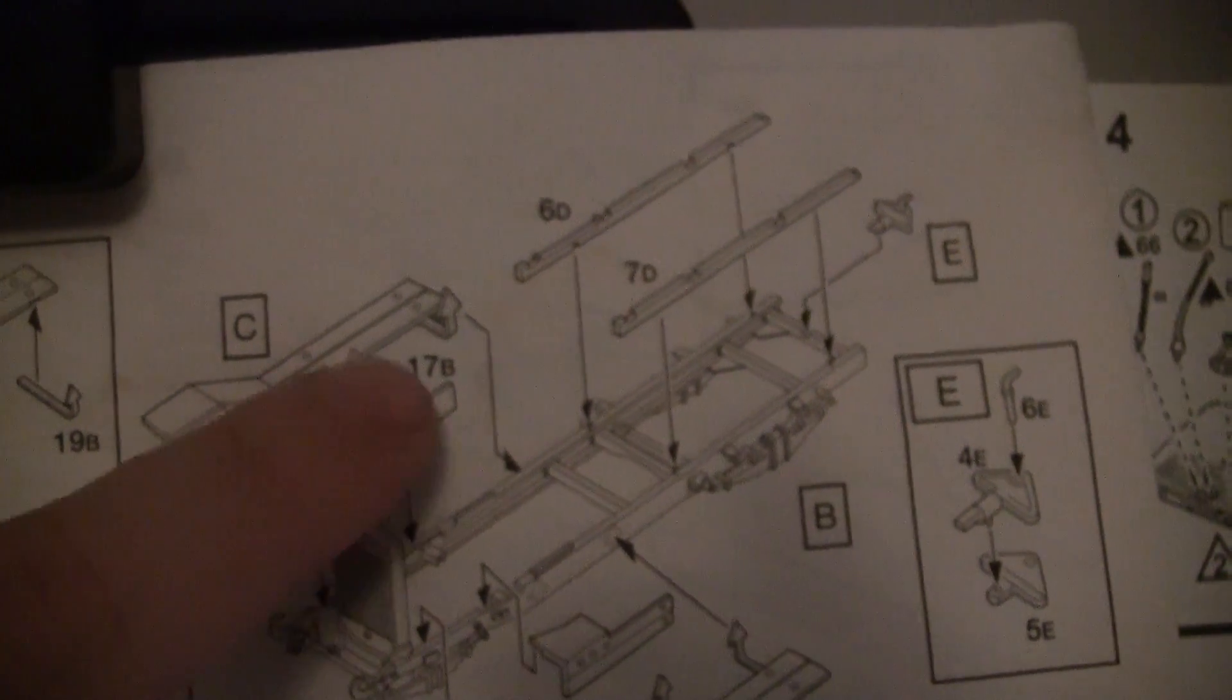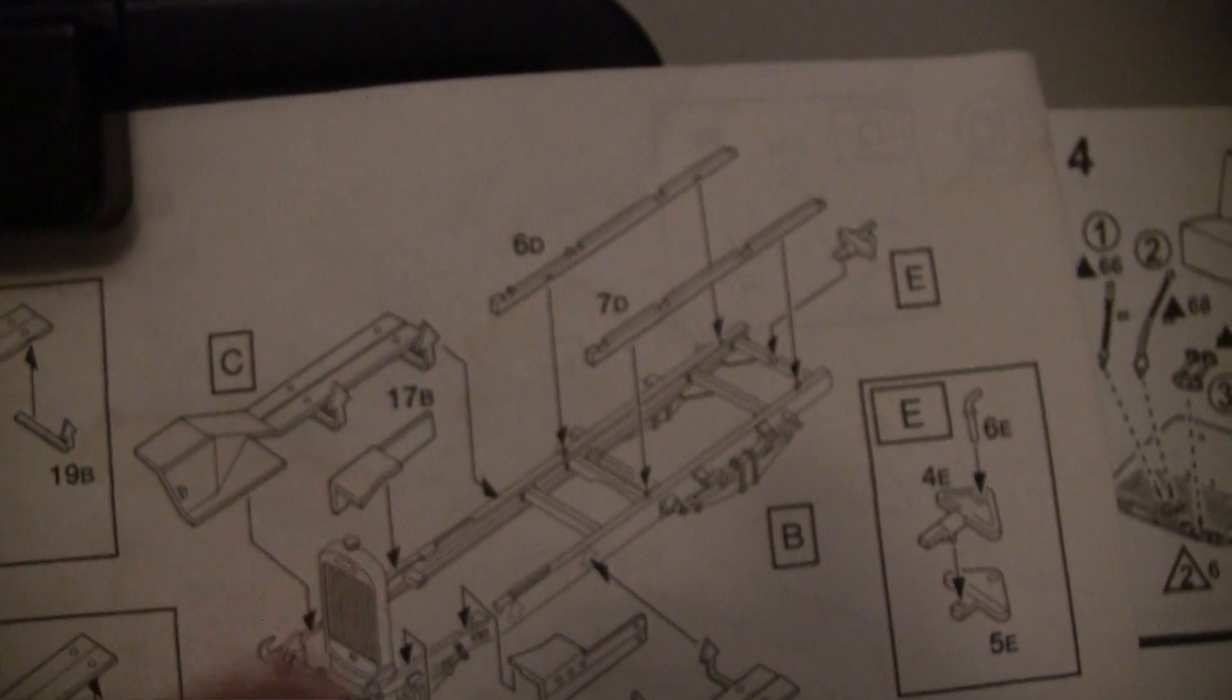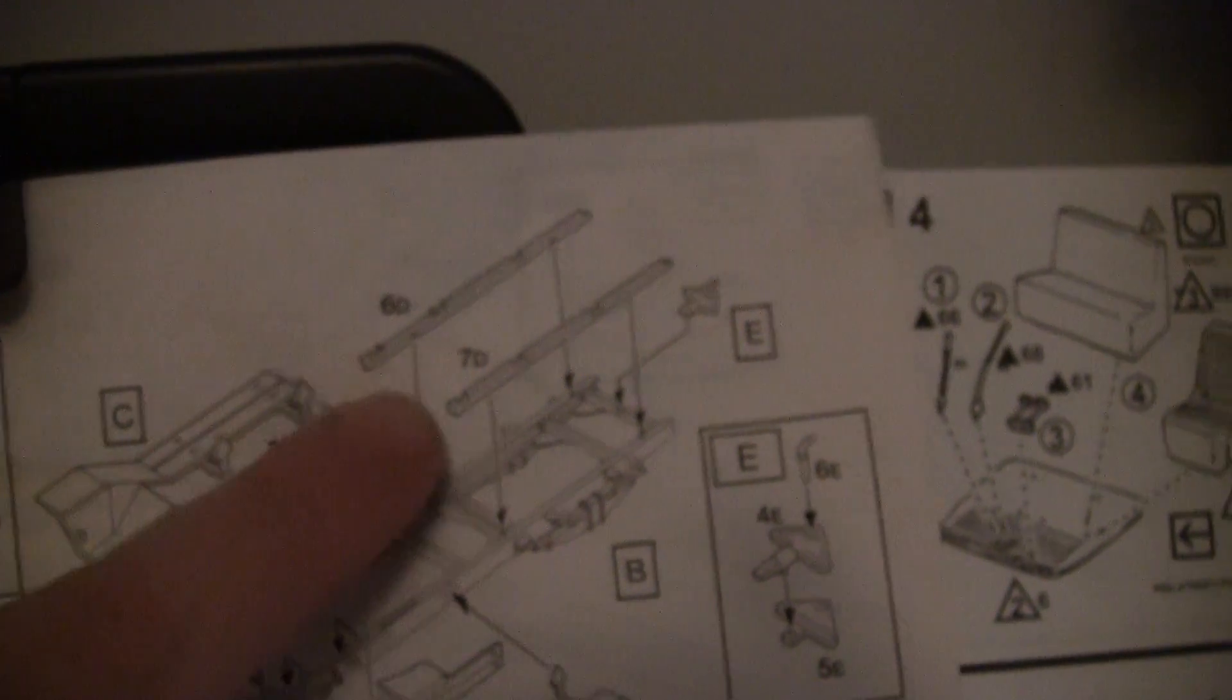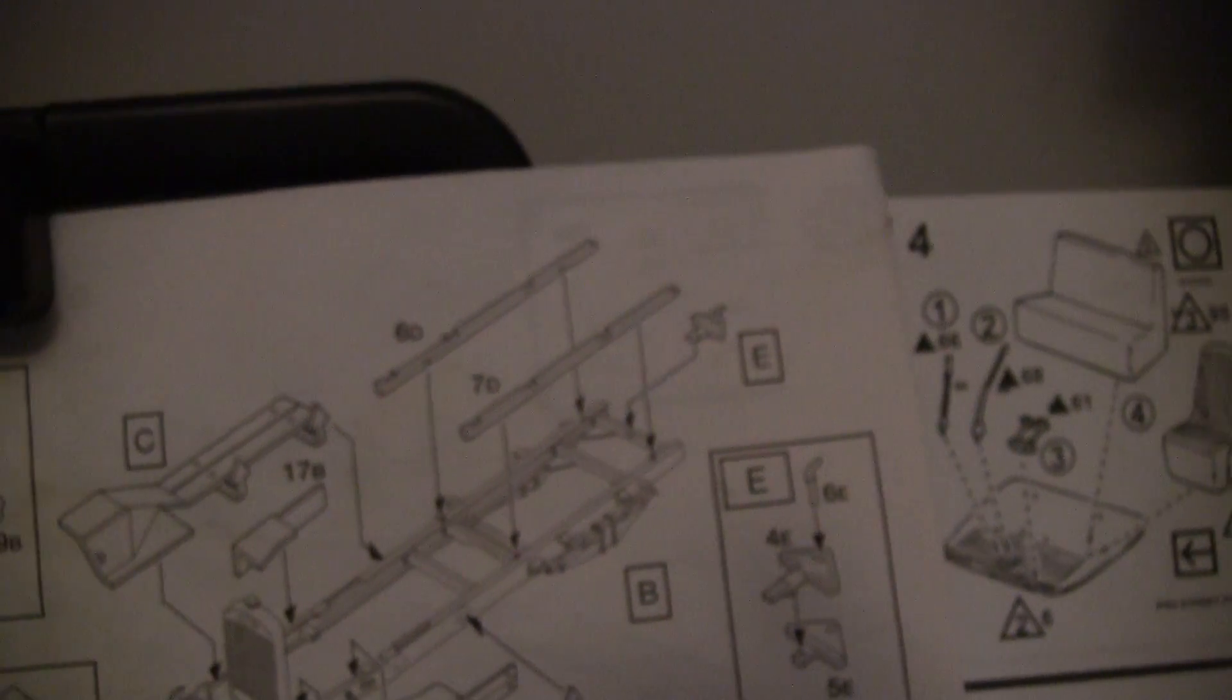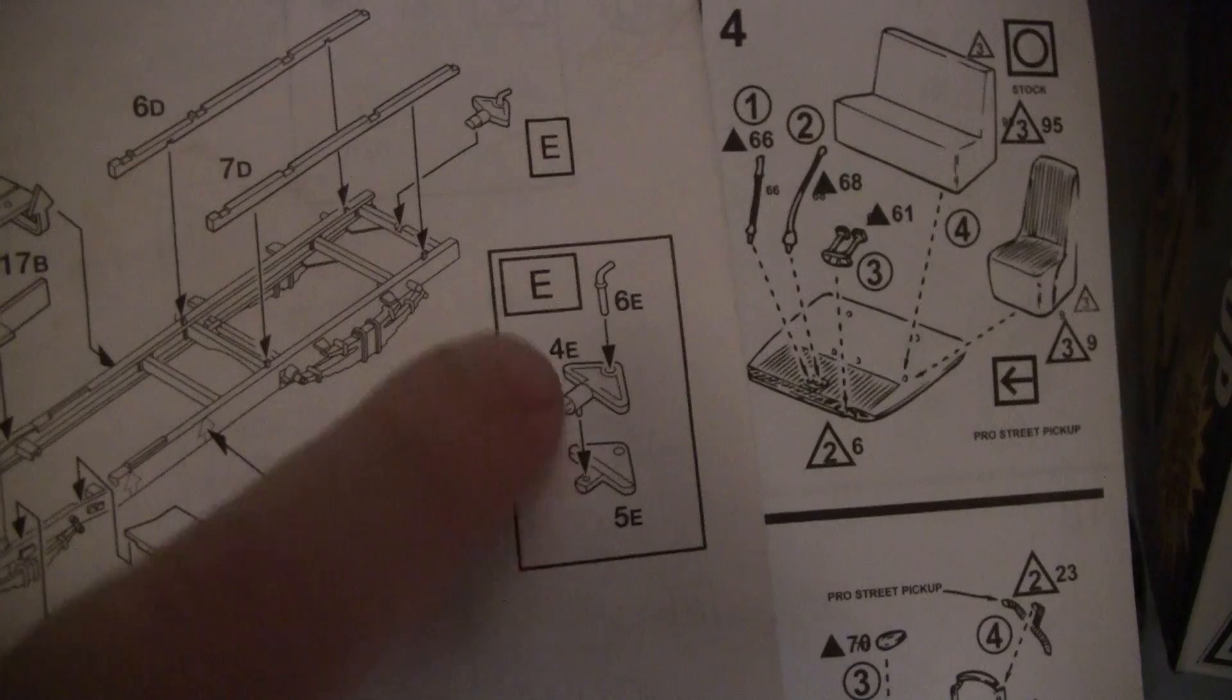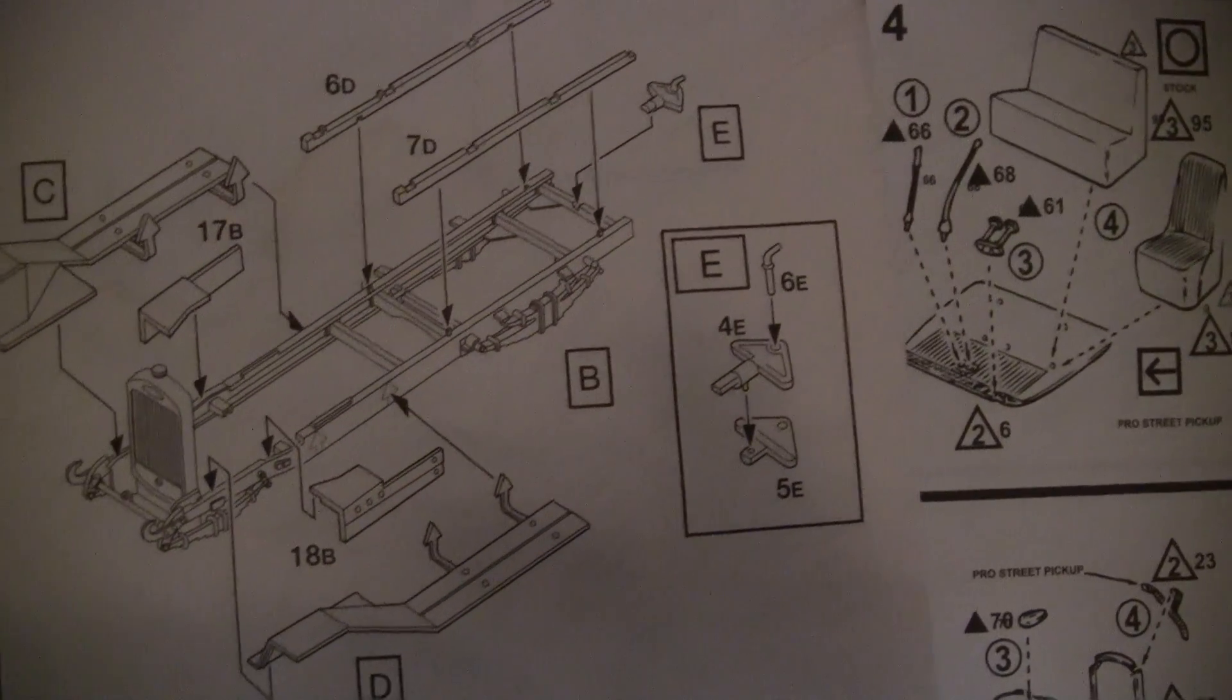That inner fender piece is all separate, and then I think this is the start of the rails for the bed. Trailer hitch is separate pieces there.